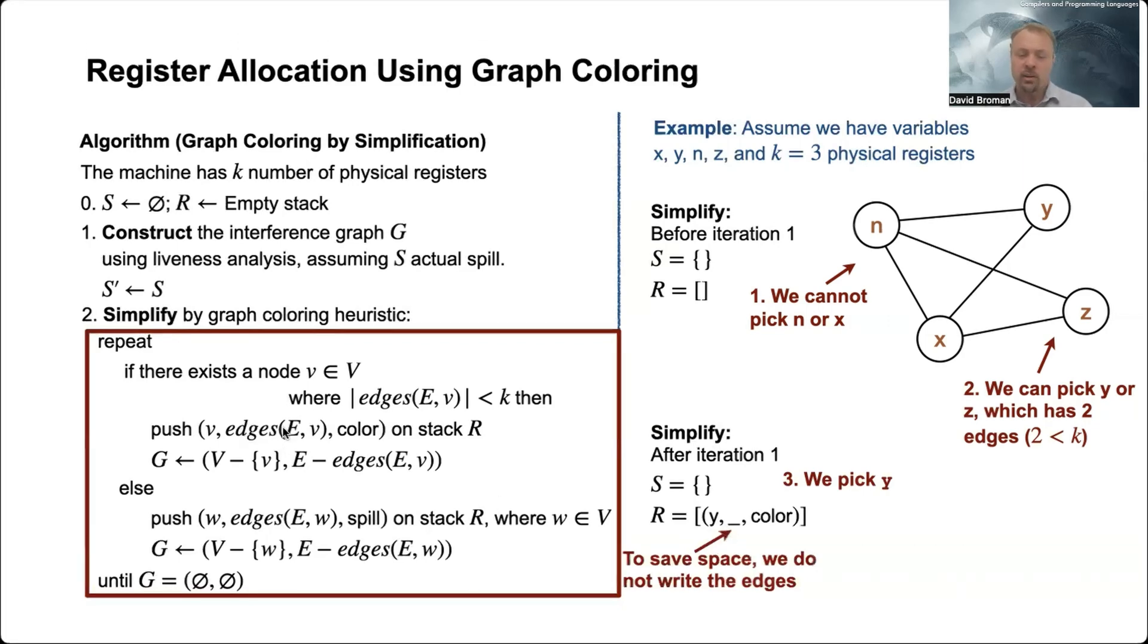Then we see here that we have edges, but we have this underscore. What we should store here are the edges - that means this edge and this edge. But it's actually stored here, it's just to save space on the slides I use an underscore, but it actually means that we have saved them there. And then we have this tagging 'color'. So here we mark and say that this item that we push on the stack is actually going to be colored.